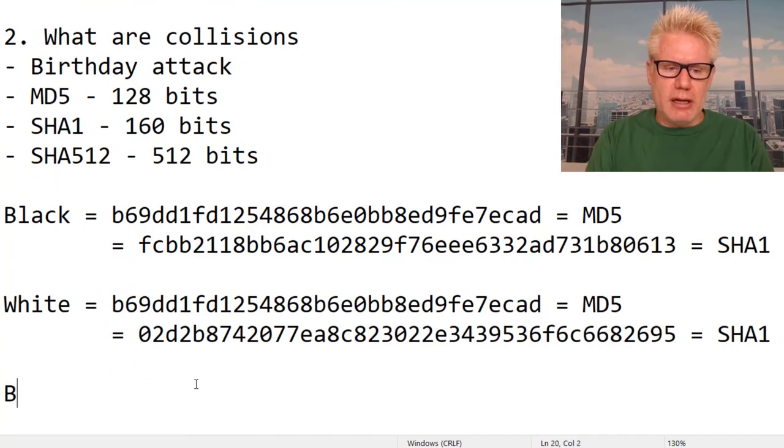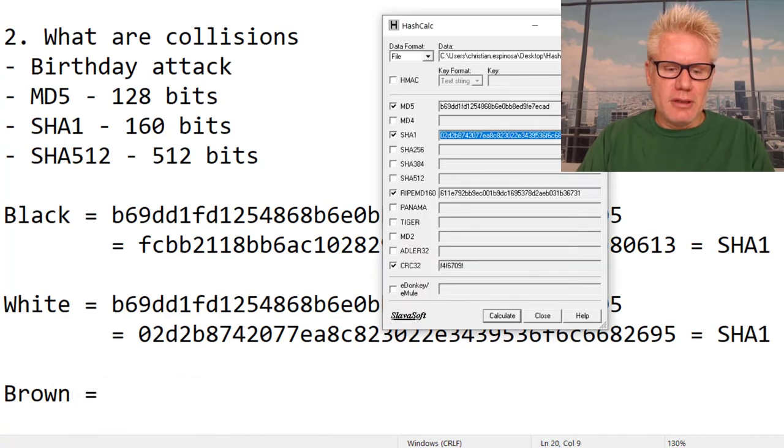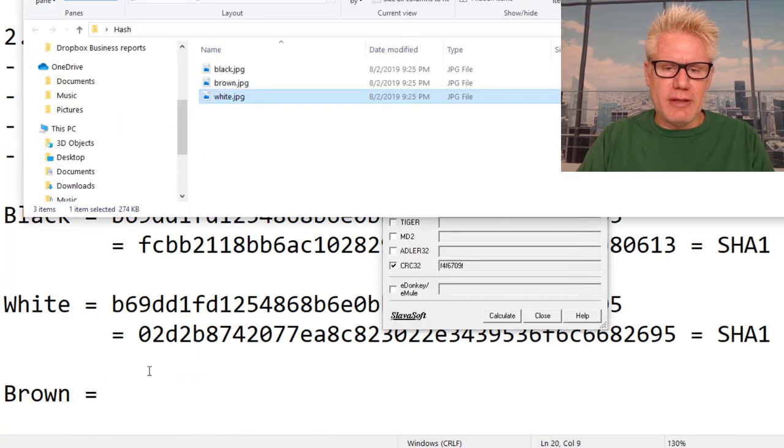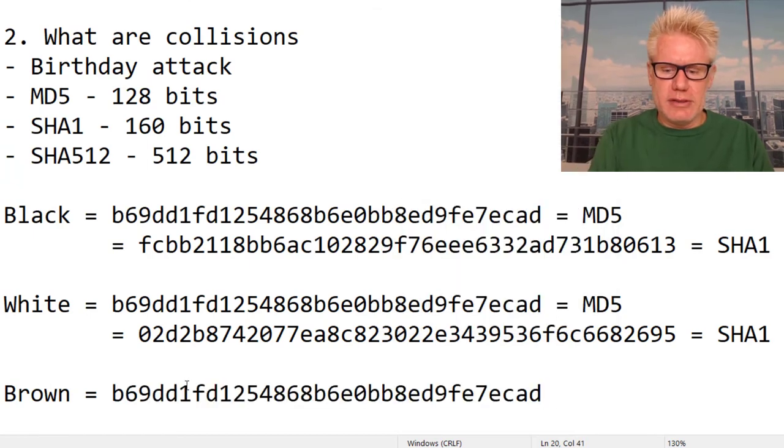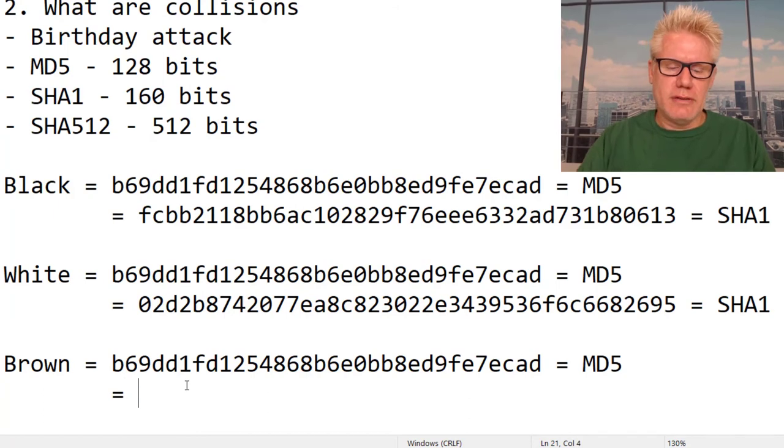And with brown, let's try that one. You kind of know where this is already headed, right? With brown, we expect the MD5 to be the same. Drag it over here. Go ahead and copy that. Brown, the MD5 is, looks like it's the same. And the SHA-1 should be different.